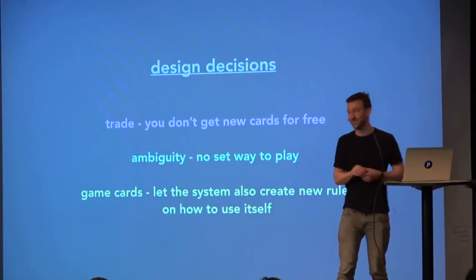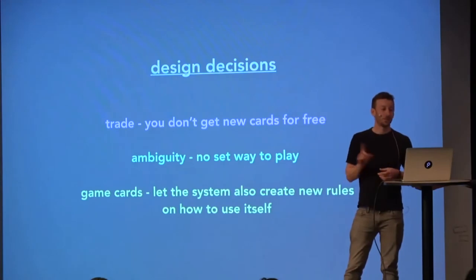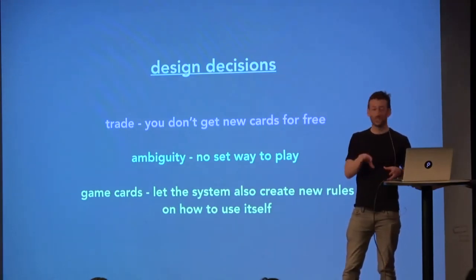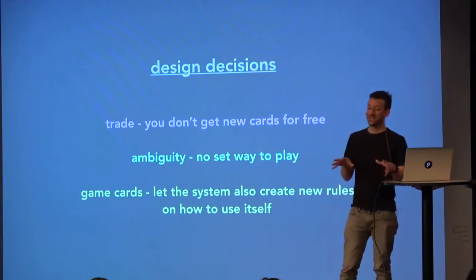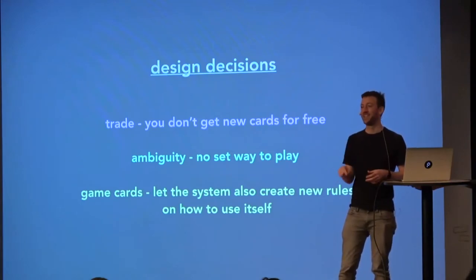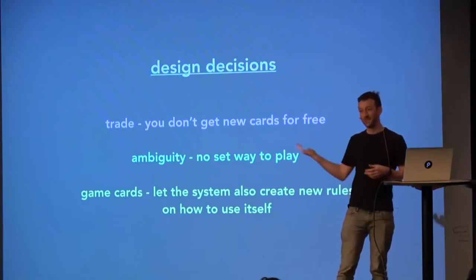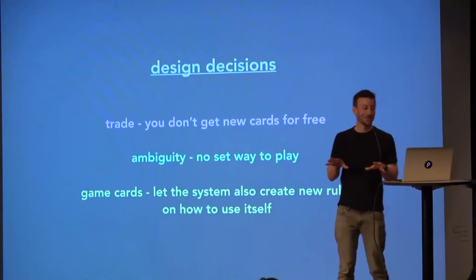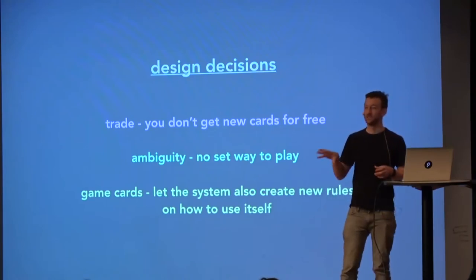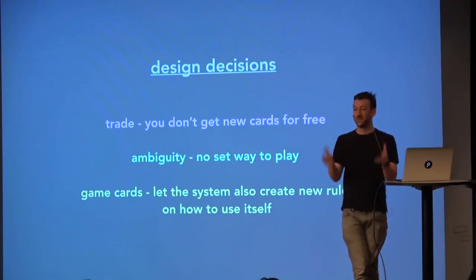A few design decisions went into this. One thing really important, going right back to Project Idea Bot, is you have to trade with the machine — you don't get ideas for free. It would be really easy to just have a button saying 'generate me new stuff,' but that gets really boring really quickly. So a deliberate decision is you have to give it something for it to give something back — and it's generous, it gives you two back. Ambiguity: we wanted no set way to play. And the game cards are my favorite and the most important, because they change how you interact with the system. It's not a fixed idea — you can actually generate new ways to interact with the system itself.